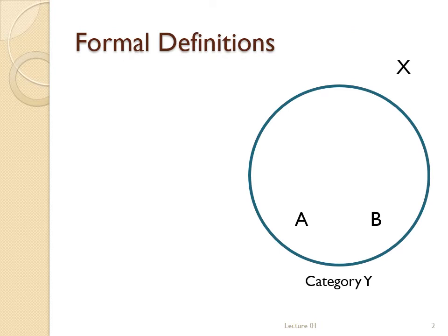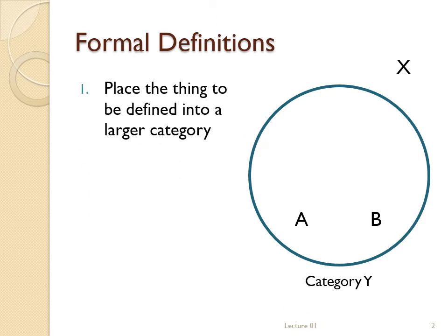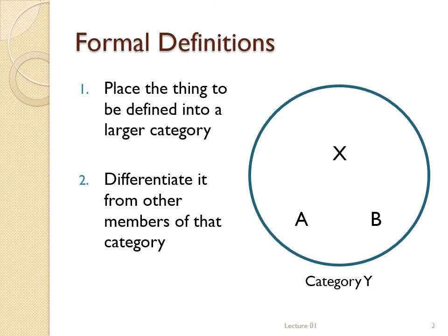We need to understand what a formal definition is in the first place. A formal definition — the sort you'd find in a dictionary — does two things. First, it takes the thing you're trying to define and puts it in a larger category: X is a kind of Y. Second, the definition differentiates that thing from other members of the same category: X is different from other kinds of Y because of Z. For example, I might define dog as the kind of four-legged animal that barks — it belongs to the larger category of four-legged animals, but it's the one that barks, not the one that meows or moos.